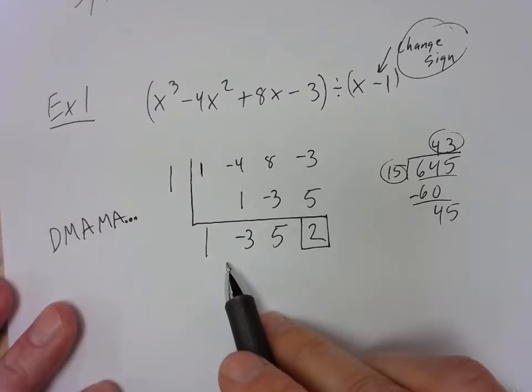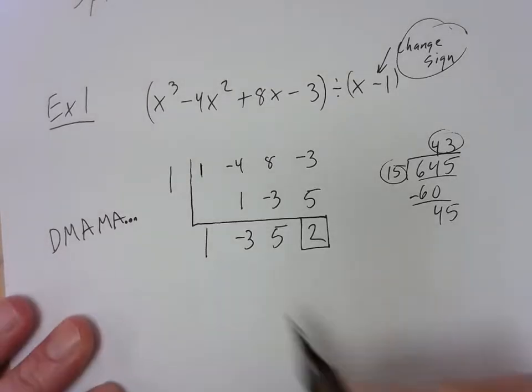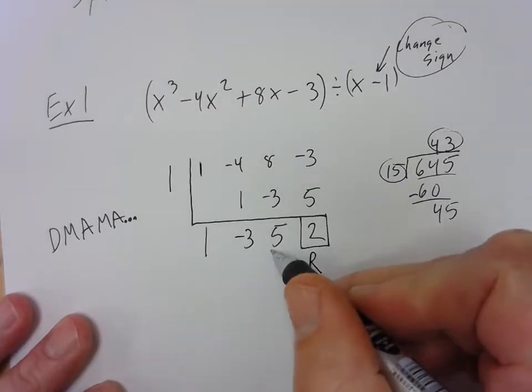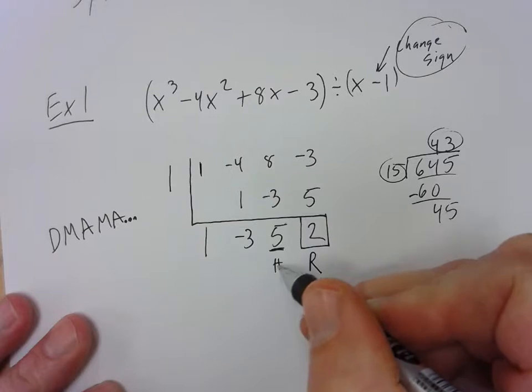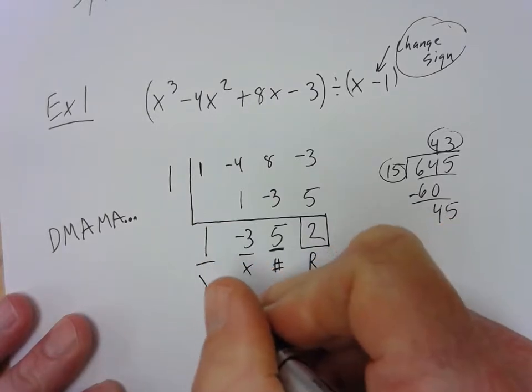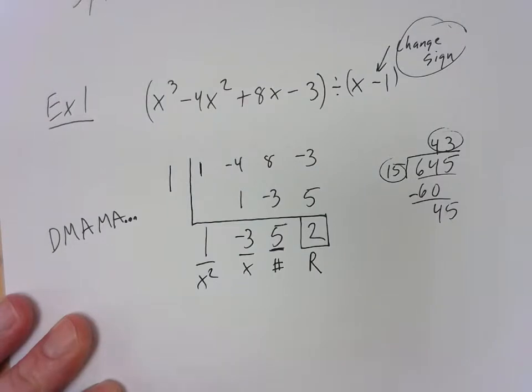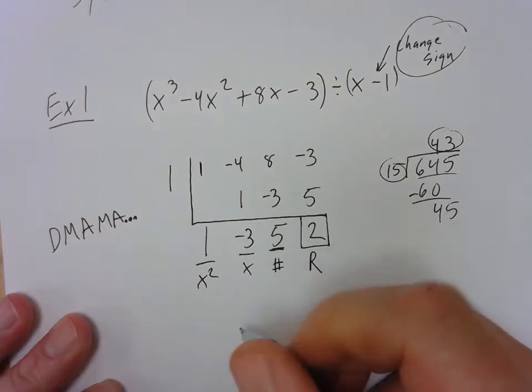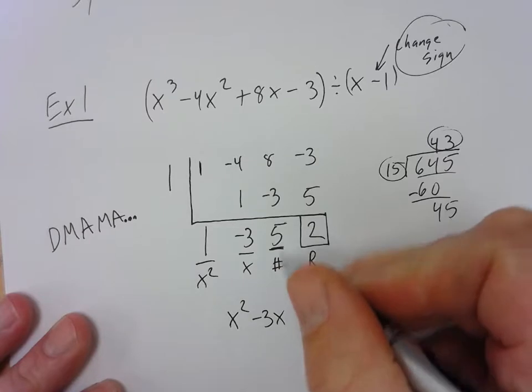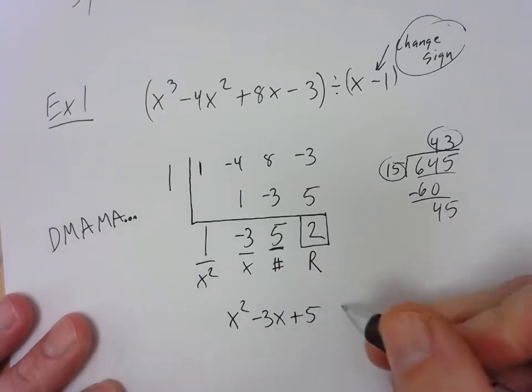All right. We're not done yet until we put the x's back in. The boxed in number is the remainder. This is the number. It's just in order. This is the x. And this is the x squared. So I put the numbers with the different letters. So 1x squared, or just x squared, minus 3x. The number is 5. And the remainder.